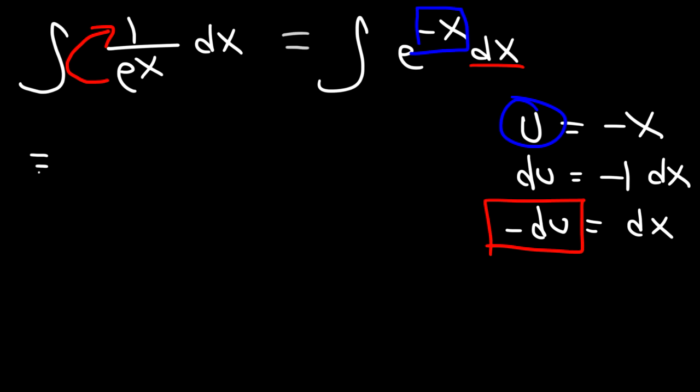So we now have the integral of e to the u times negative du. And I'm going to move the negative sign to the front. So this is negative integral e to the u du.